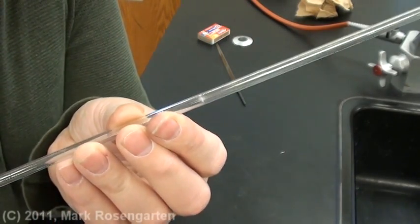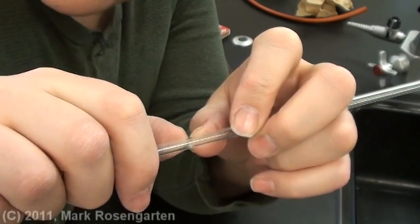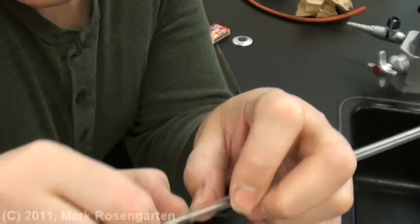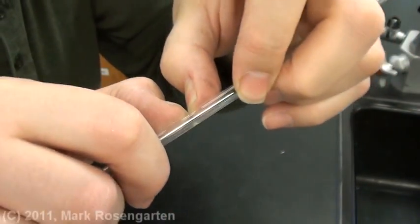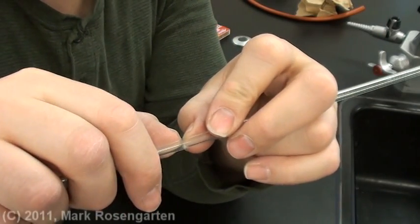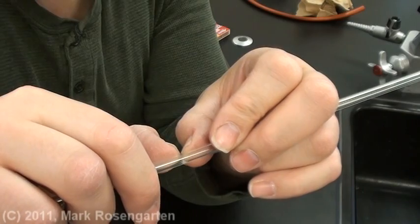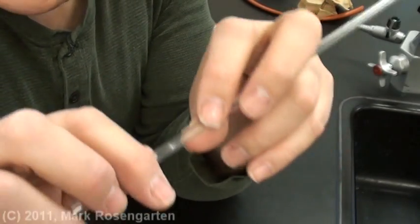Now we have a scratch on our glass tube. That's all you need to break it. The scratch is facing the camera. My thumbs are directly behind the scratch together to put the most force directly into the scratch. Push into the scratch. If it doesn't break right away, that's because your scratch isn't deep enough.